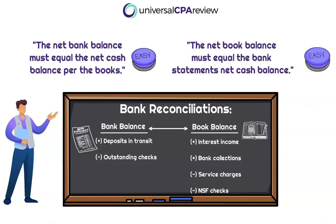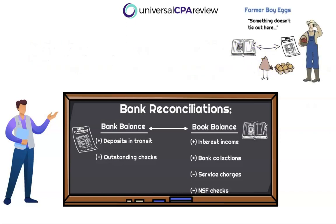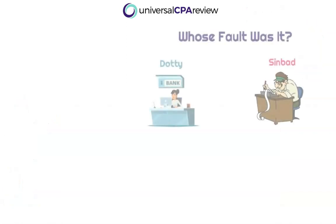At the end of the day, we want to get our actual cash balance. Let's think about Farmer Boy Eggs Corporation. They're reporting their financial statements, but they notice that what is being reported in the cash balance in their books doesn't tie out to what they see in their bank statements over at JPMorgan Chase. So they want to know: whose fault is this? Is this our bookkeeper's fault — our boy Sinbad, who works in our bookkeeping department — or is this our banker Dottie's fault over at JPMorgan Chase?